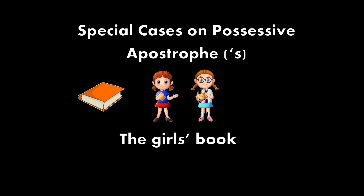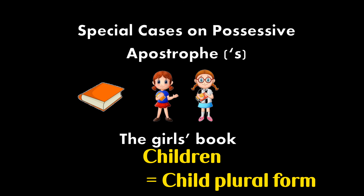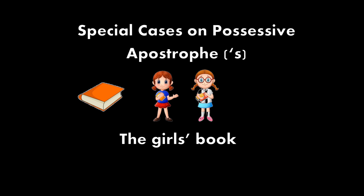Of course, there are some special cases on possessive apostrophe. Say there are still two girls and one book, but now I'm not going to use the word 'girls'. Instead, I'm going to use 'children'. Children is the plural form for child, which means there are more than one child. So am I going to use apostrophe S or S apostrophe?